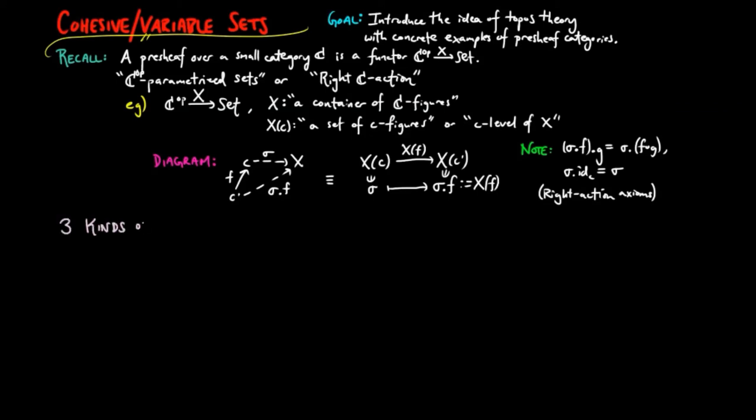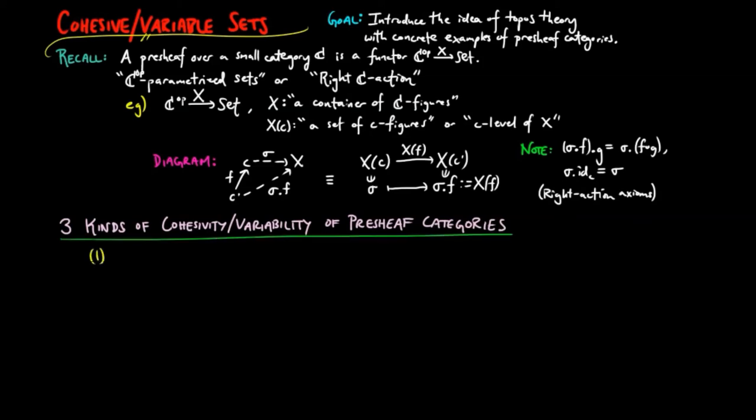We have isolated three kinds of presheaf categories in terms of how we interpret the right actions. First, the right action may be given as a boundary.